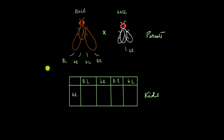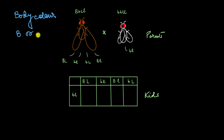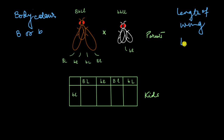This cross was dealing with two very specific traits. One of them was the body color, which could either be brown or black, encoded by a capital B and a small b. And the other one was the length of the wing, which could either be long or short, encoded by capital L and small l.